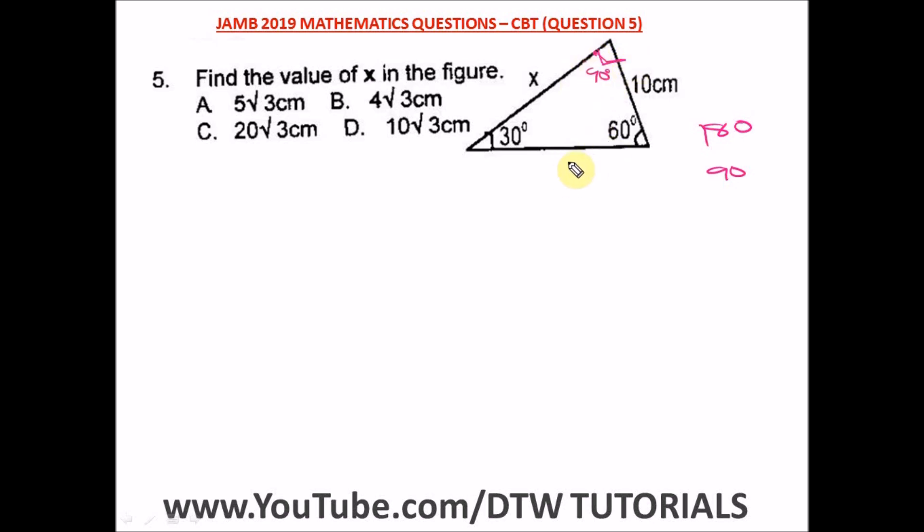So from here, this is the hypotenuse, this is the opposite, and this is the adjacent. All right, so we have to look for the value of x. Since it's a right angle triangle, it's easy for us to get that.